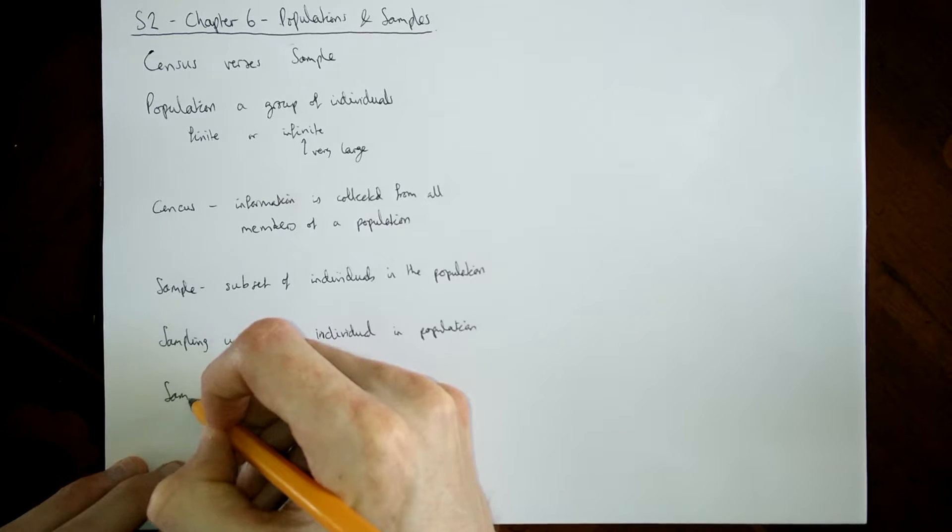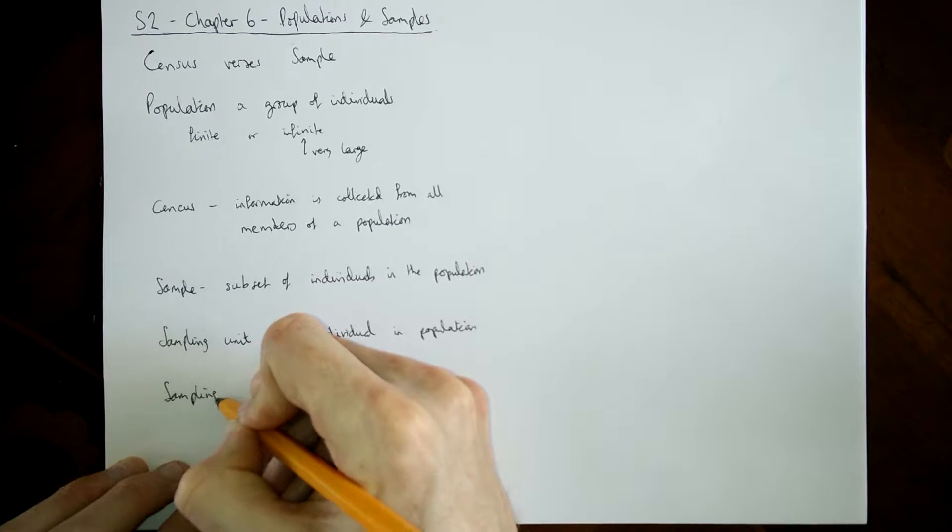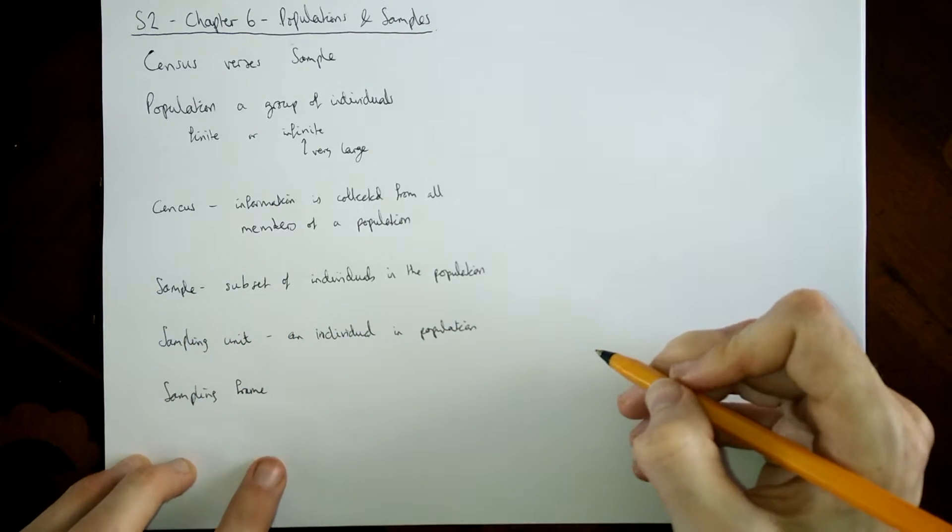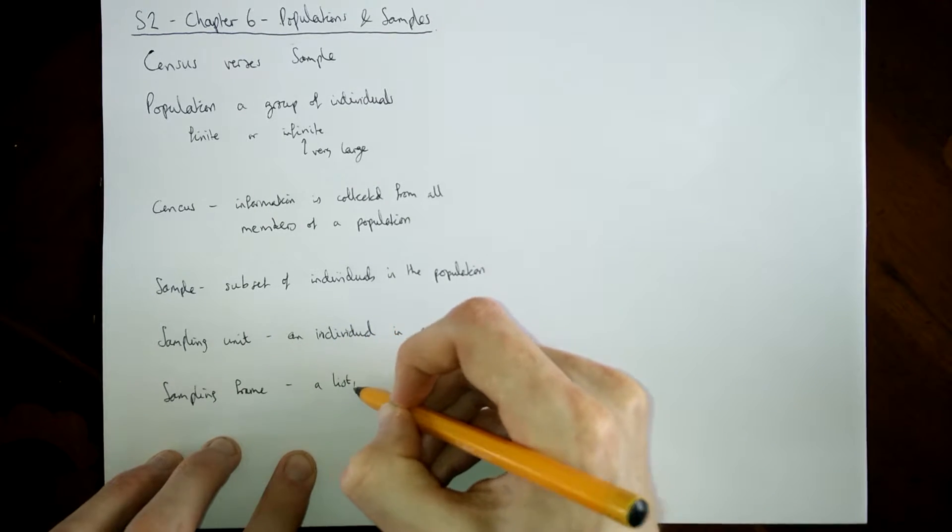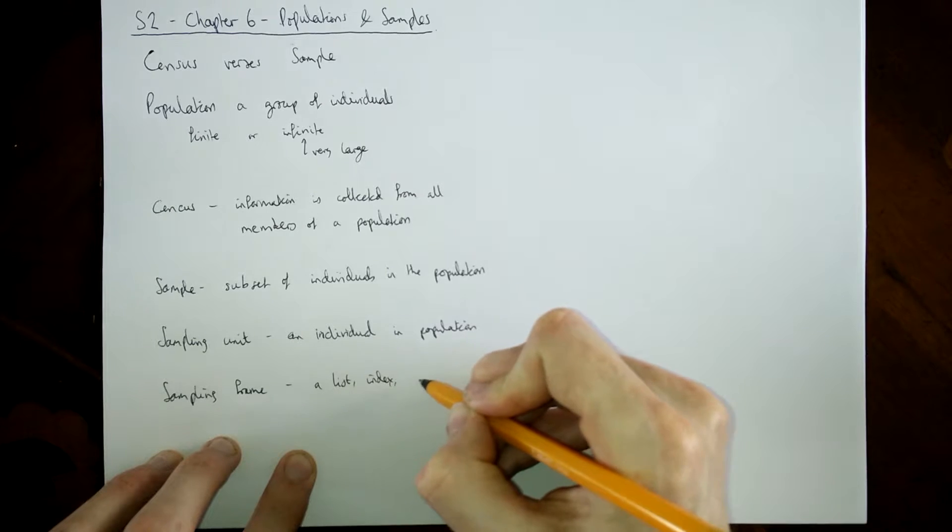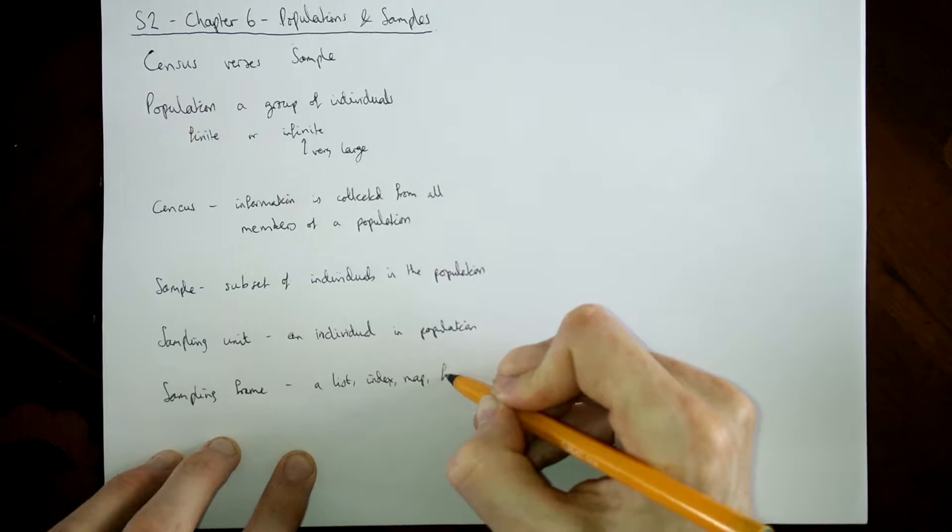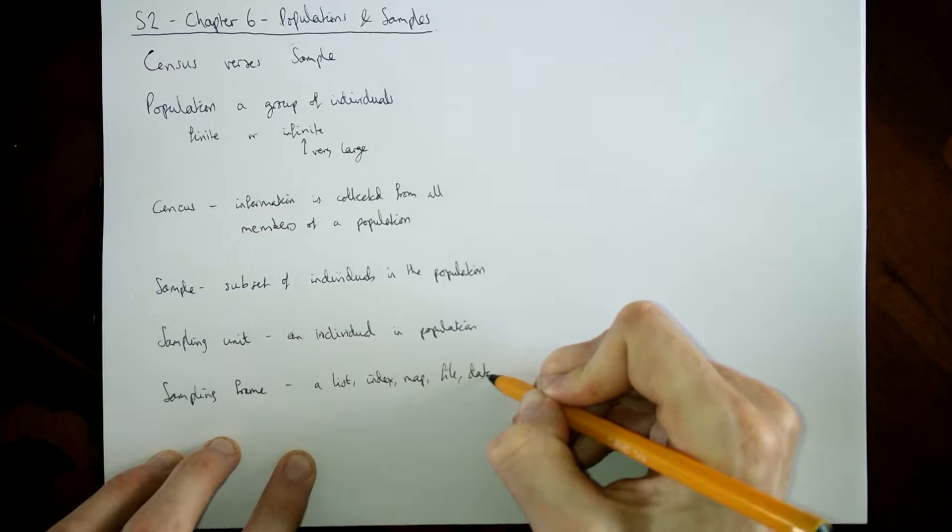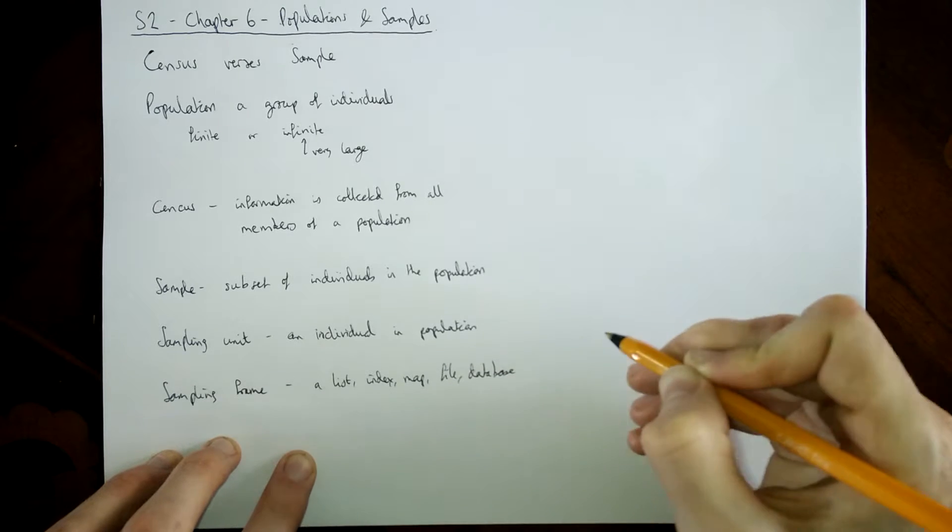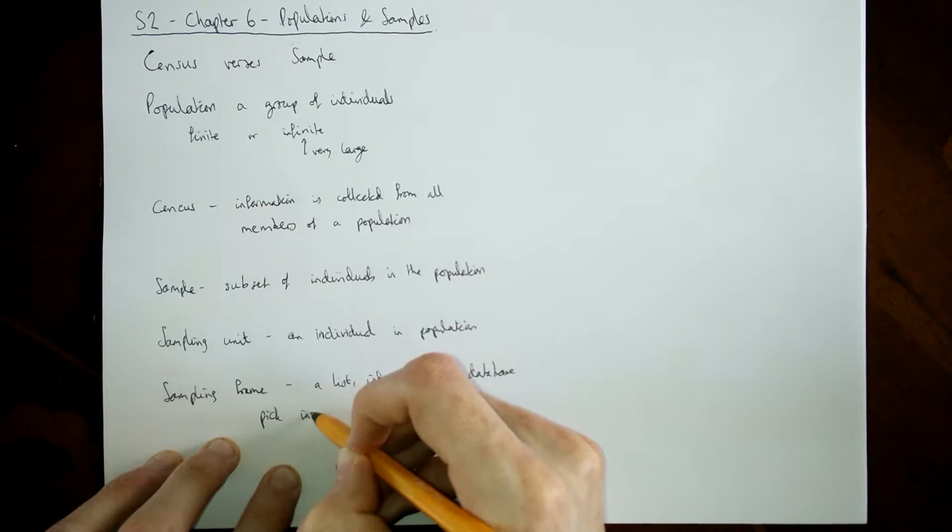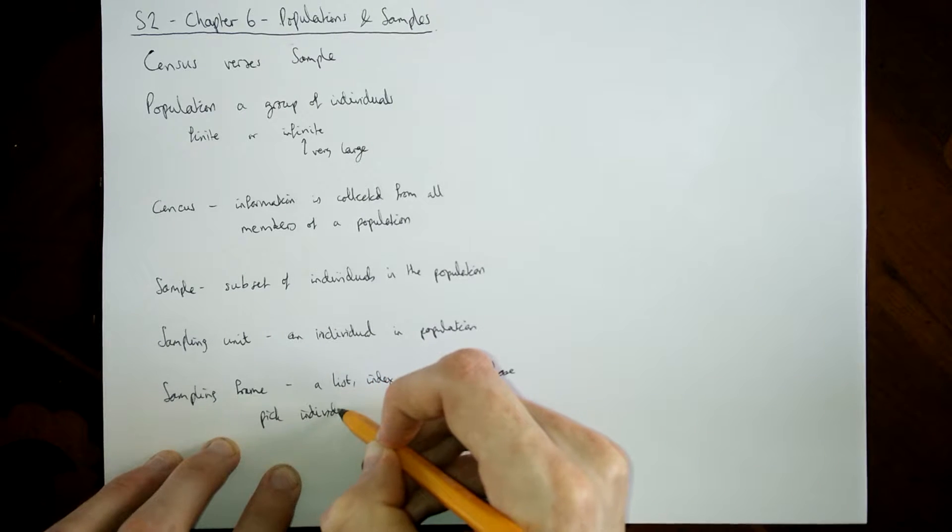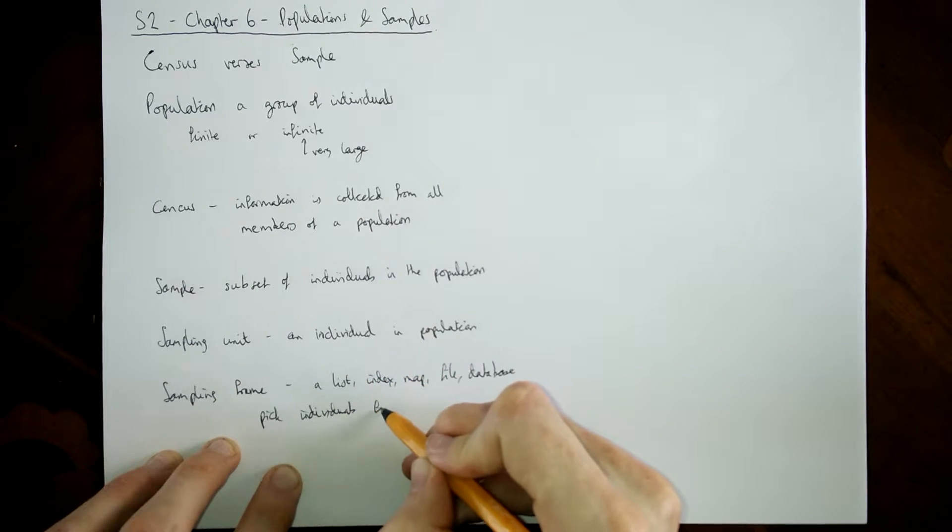Sampling frame is the other word we need to get down on paper before we start doing anything else. So a sampling frame is something like a list or an index or a map or a file or a database. What it is, is basically a way of giving a unique number or code or something which allows you to pick individuals for the sample.